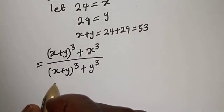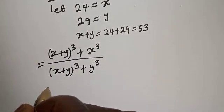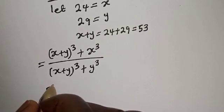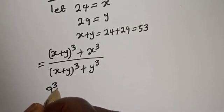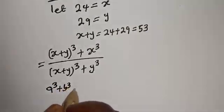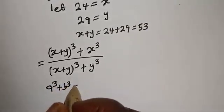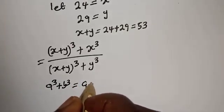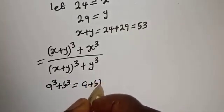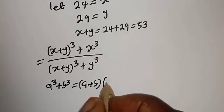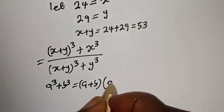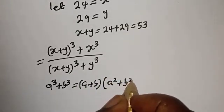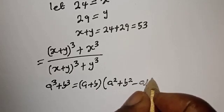Take note of this exponential rule: a raised to power 3 plus b raised to power 3 is equal to a plus b, bracket, a squared plus b squared minus ab.